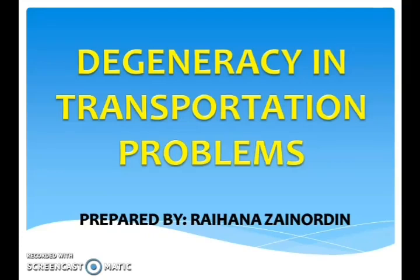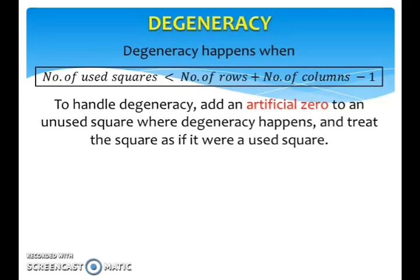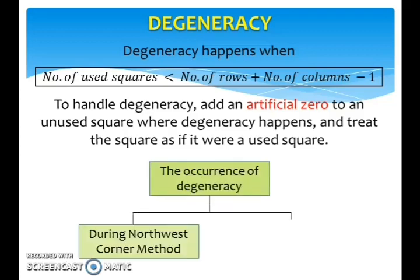Degeneracy in Transportation Problems. Degeneracy happens when the number of used squares is less than the number of rows plus the number of columns minus 1. To handle degeneracy, add an artificial zero to an unused square where degeneracy happens and treat that square as if it were a used square. Degeneracy can happen during the Northwest Corner Method and during the Modi Method.